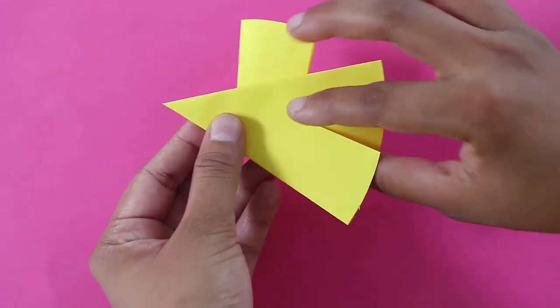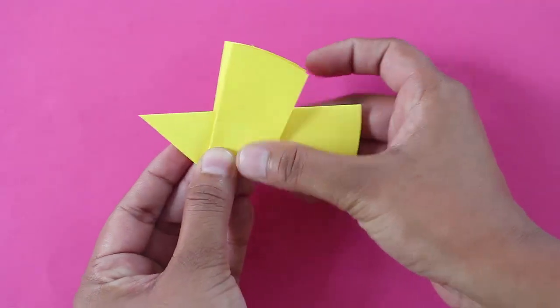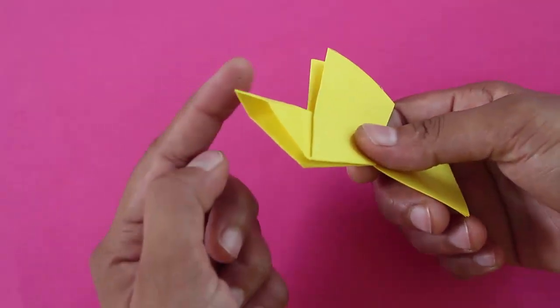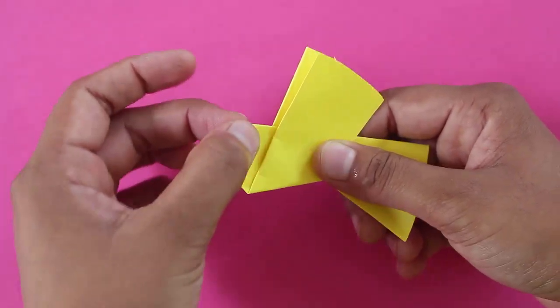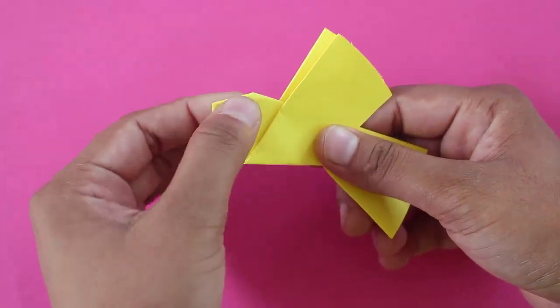Fold the cut line both on the front and back to make the wings of the pigeon. Fold a small beak for the pigeon.